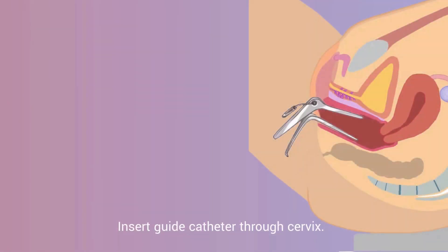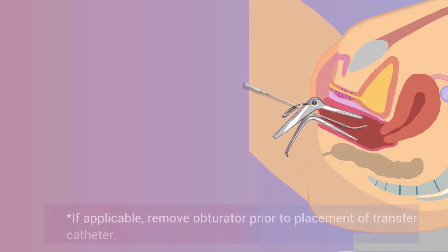Insert the guide catheter through the cervix. If applicable, remove the obturator prior to placement of the transfer catheter.